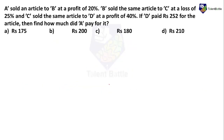A sold an article to B at a profit of 20%. B sold the same article to C at a loss of 25%, and C sold the same article to D at a profit of 40%. If D paid rupees 252 for the article, then find out how much did A pay for it. This question belongs to profit and loss.